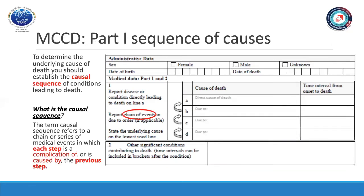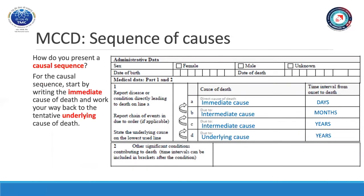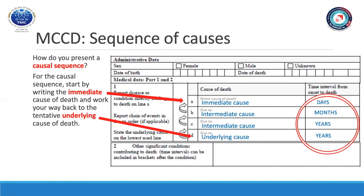The term causal sequence refers to a chain or series of medical events in which each step is a complication of or is caused by the previous step. To complete the causal sequence, you can start by writing the tentative underlying cause of death and then work upwards to the immediate cause of death listed in line A. You can also start by writing the immediate cause of death and work your way back to the tentative underlying cause of death. This approach is recommended by the World Health Organization. Remember to always include a time interval for each condition listed. The originating condition of the causal sequence is the tentative underlying cause of death which initiated the chain of events leading ultimately to death.